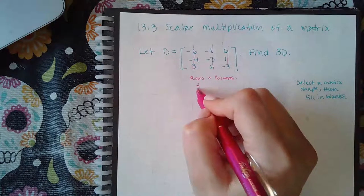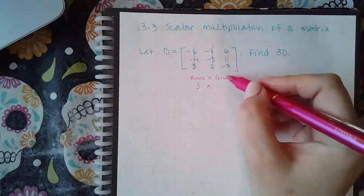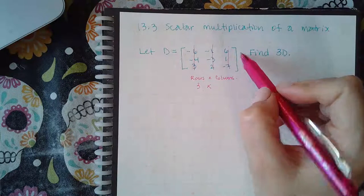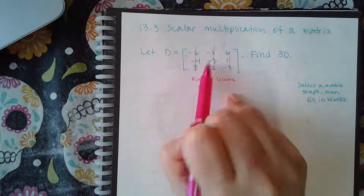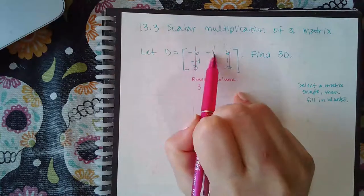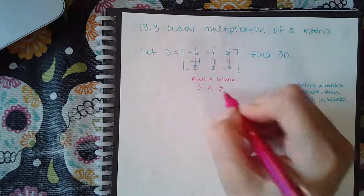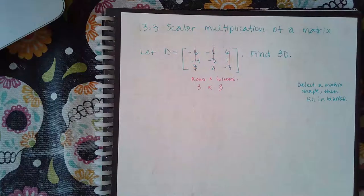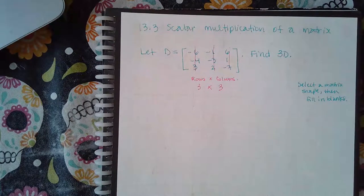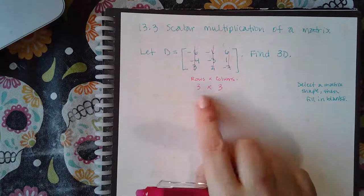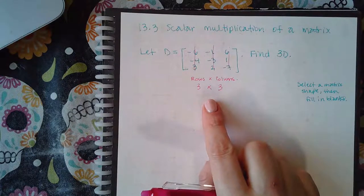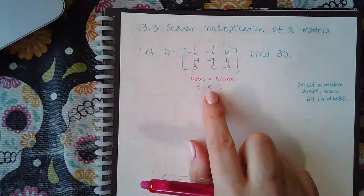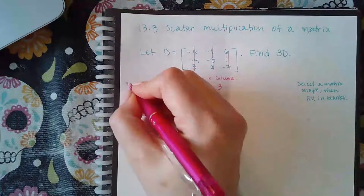Three rows. Columns, you're going to count across because that's how you figure out how many columns you have. So I have one column, two columns, three columns. So this one happens to be a three by three dimensional matrix. This is going to be important later because we are going to have another kind of multiplication later and you definitely need to know the shape or the dimensions.